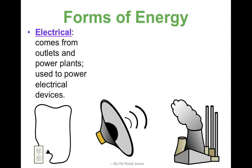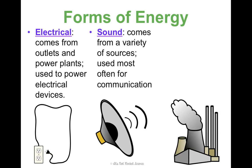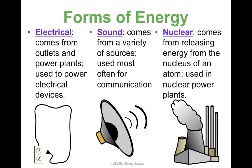Another type of energy is electrical. This comes from outlets and power plants, and it's used to power electrical devices — so anything that has a cord that plugs into an outlet is using electrical energy. Sound is also a form of energy; it comes in a variety of sources, and we most often use sound just for communication. Nuclear is kind of a fun one, and we're going to spend some time on this in our reactions unit at the end of the year. Nuclear energy comes from releasing energy from the nucleus, which is the center of an atom, and it's used in nuclear power plants and atomic bombs — a pretty powerful energy source.